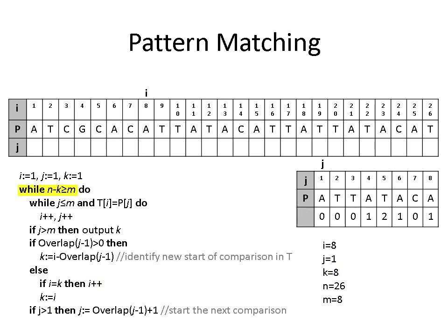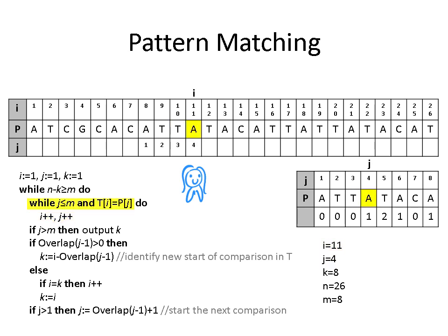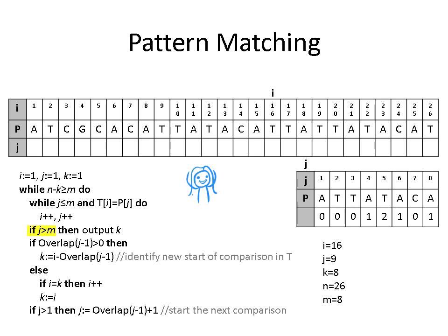In position 8 of our target string, we have a match, so I and J are incremented — J is now 2. We continue matching: J becomes 3, 4, 5, 6, 7, 8, 9. At J equals 9, J is greater than M, so we exit the while loop. The if statement is satisfied, so we output K equals 8, which represents the start of a full match of the pattern. The next if statement is satisfied, so we use the overlap of the last position matched to find a new starting point for our comparison — in this case K equals 15, and we start matching at J equals 2.